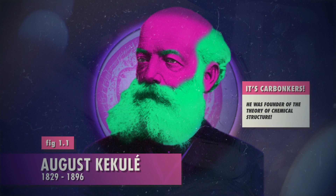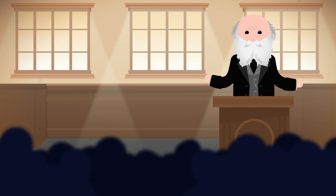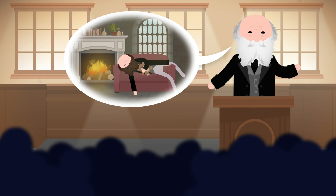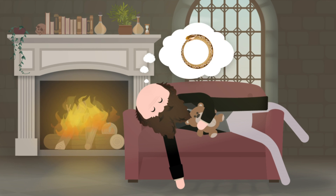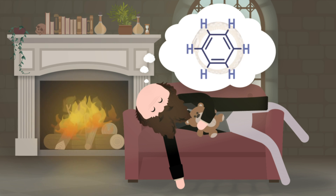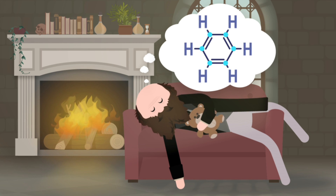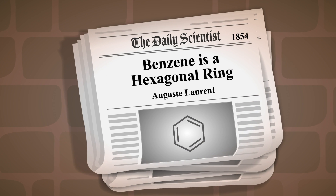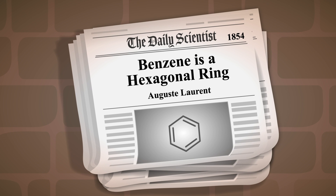The German chemist August Kekule is one of those people who's often considered a founder of modern organic chemistry. In a speech at a symposium in 1890, he told the audience that 30 years earlier he was dozing near a fire in Ghent, Belgium, when the image of a snake devouring its own tail came to him. This dream, he said, was what led him to the chemical structure of benzene, a flat ring of six carbon atoms with the formula C6H6. This story has been repeated widely, but some scientists have questioned it. In 1854, for example, an article was published in a French journal that showed benzene as a hexagonal ring.